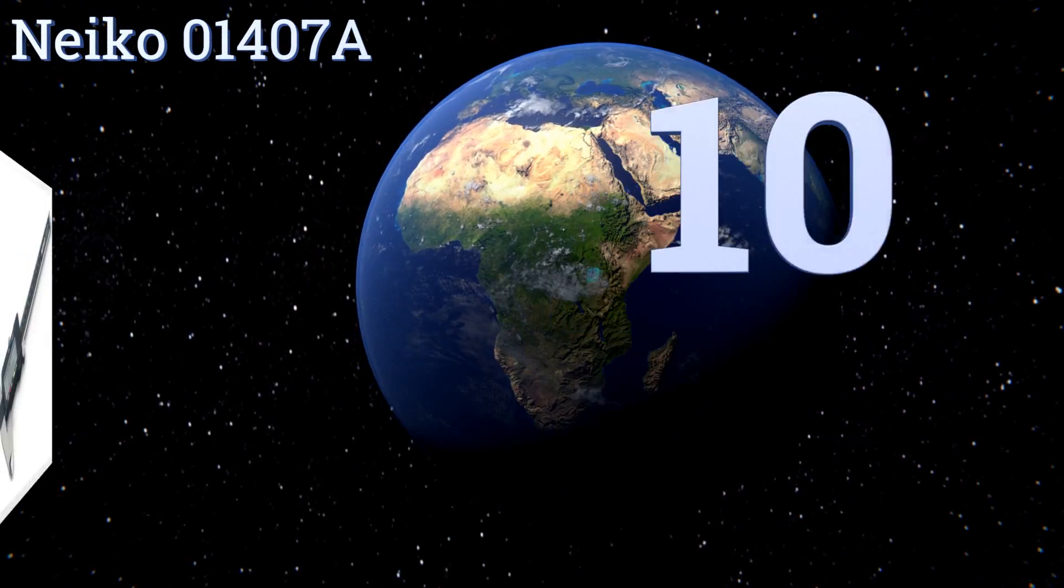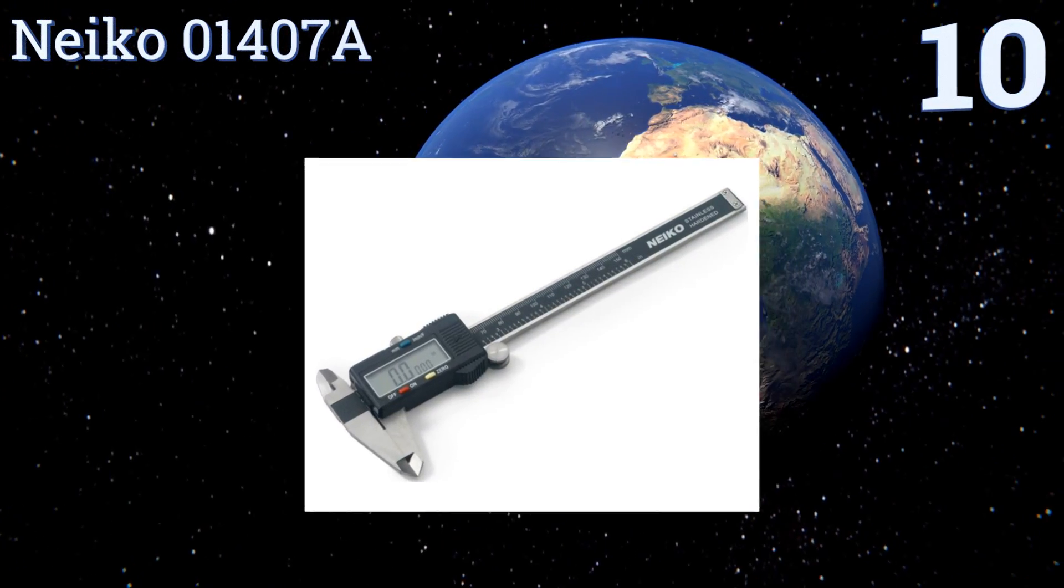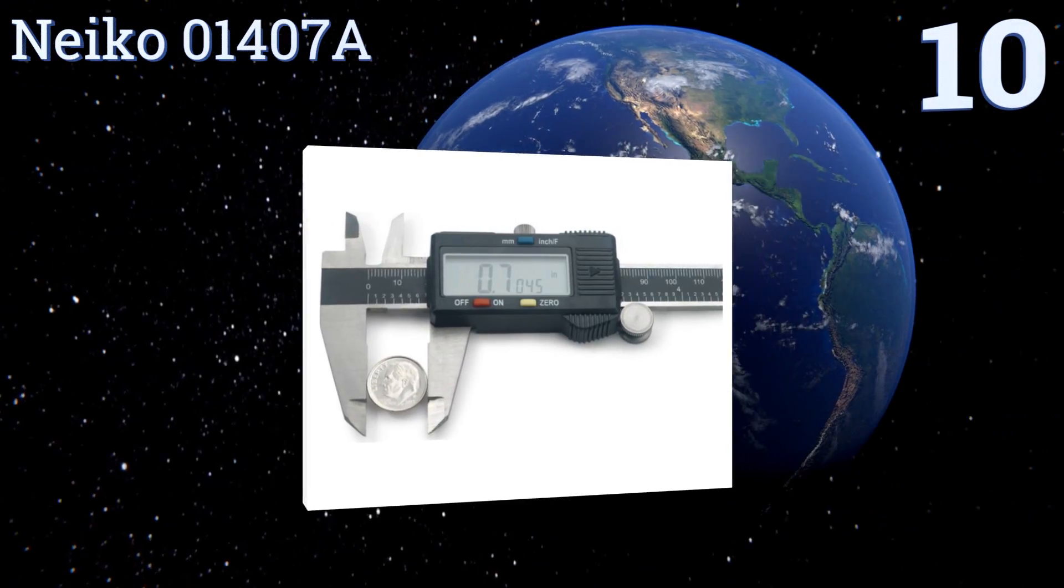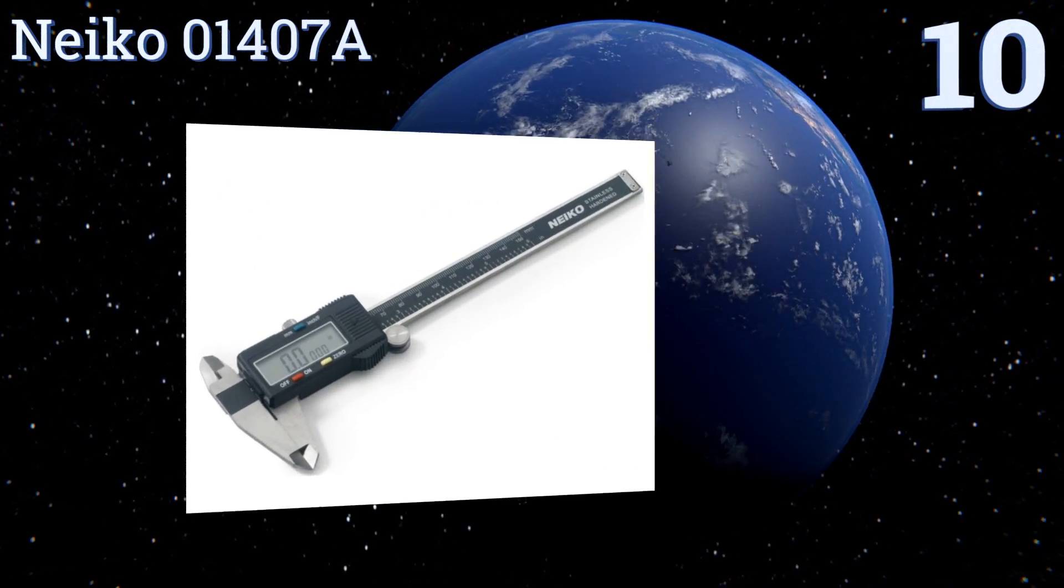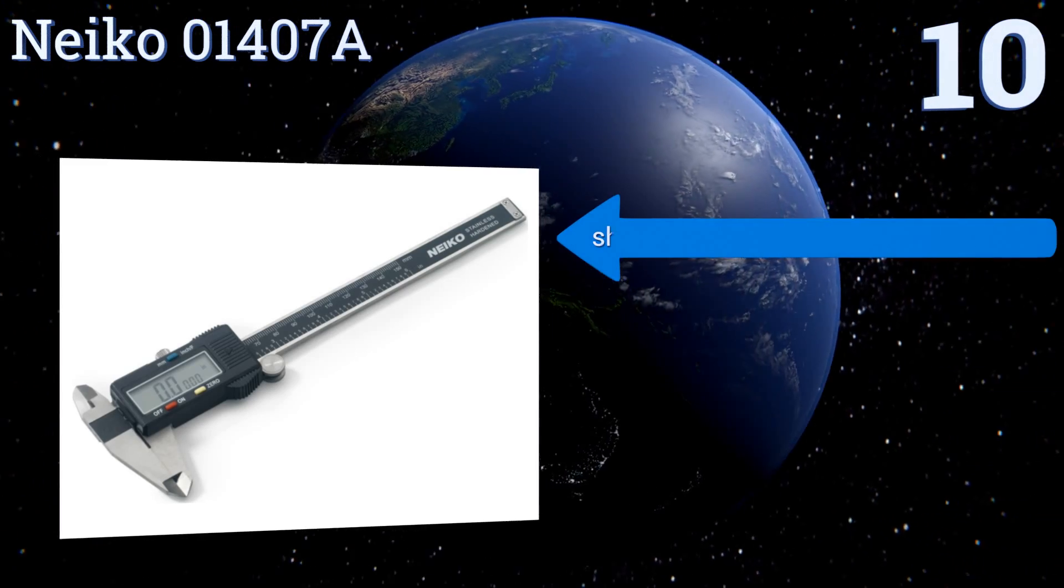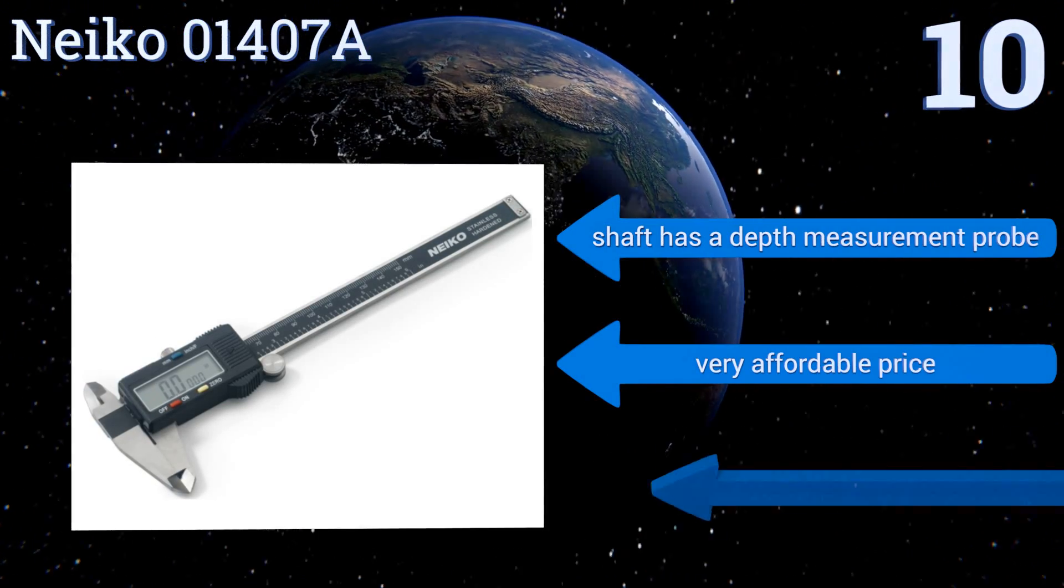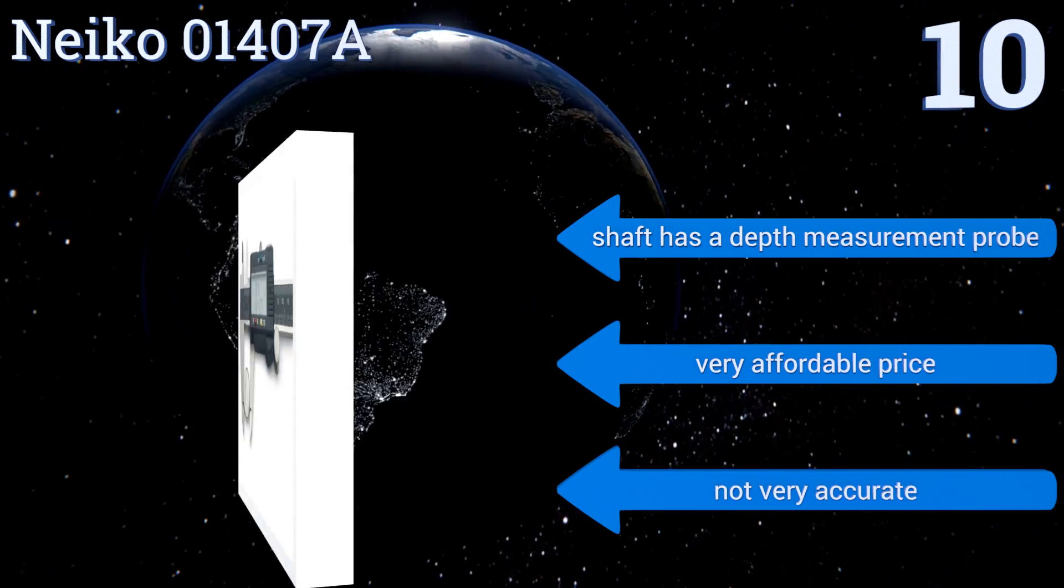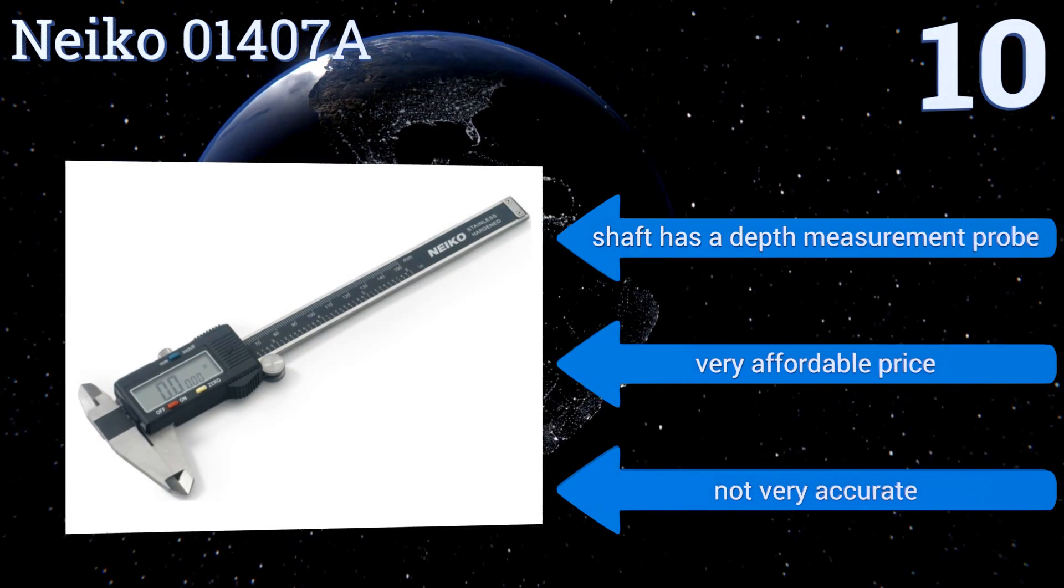Starting off our list at number 10, with a bright clear digital display and efficient one button switching between inches and millimeters, the Neiko 01407A is designed for effortless operation whether you're in the field or in the lab. This model may not stand up to heavy or full-time use though. Its shaft has a depth measurement probe and it's very affordably priced, however it's not very accurate.